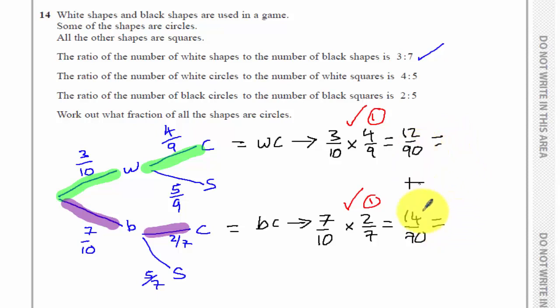Just going to see how these simplify to make the addition easier. So 12 over 90, if I divide by 6, becomes 2 over 15. 14 over 70, divide it by 2, becomes 7 over 35. Oh, I can divide it by 7 now. Becomes a fifth.